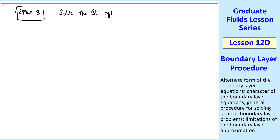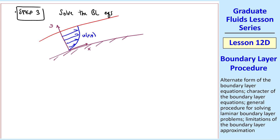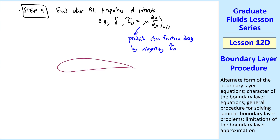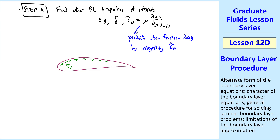Step three, the harder part, is to solve the boundary layer equations: solving for the velocity profile u(x,y) and corresponding v(x,y) at each location, marching downstream along the wall. Step four, assuming we can do that, is to find other boundary layer properties of interest — for example, delta (how thick is the boundary layer), the shear stress at the wall found by τ_wall = μ ∂u/∂y evaluated at y = 0, both as functions of x. From this, you can predict skin friction drag by integrating τ_wall along the body.